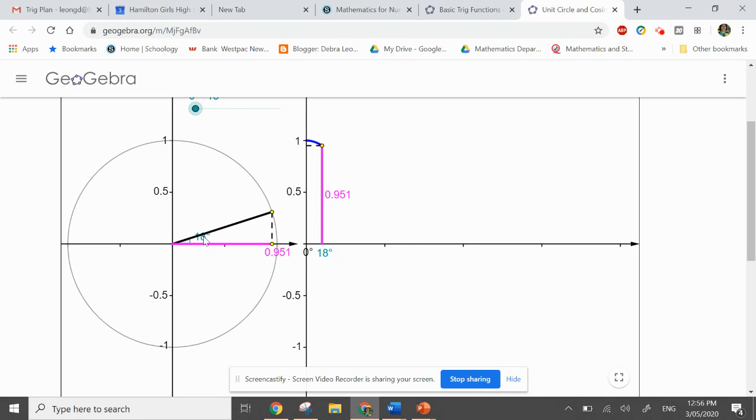You can see here we've got 18 degrees, and the distance here is moving back this direction so it's becoming less—that's 0.951. That's the cosine value.